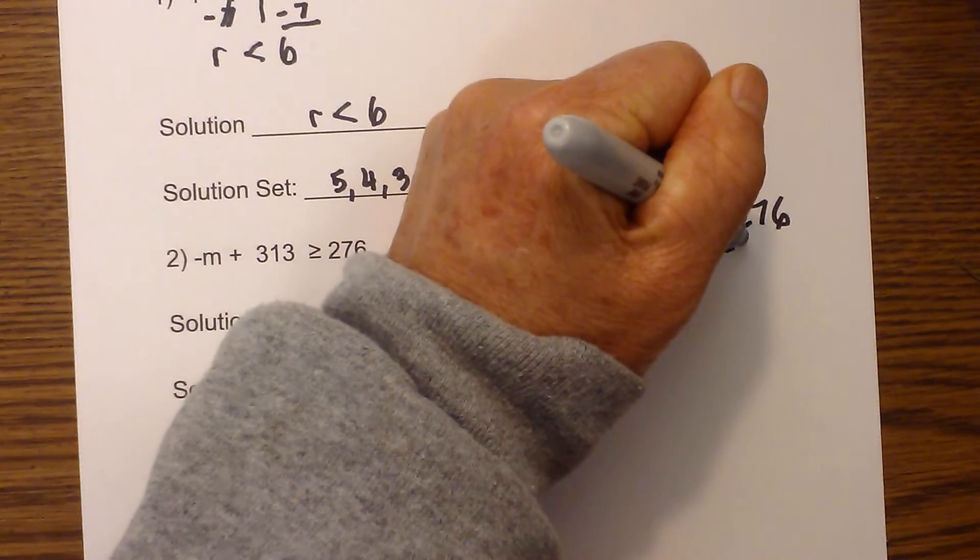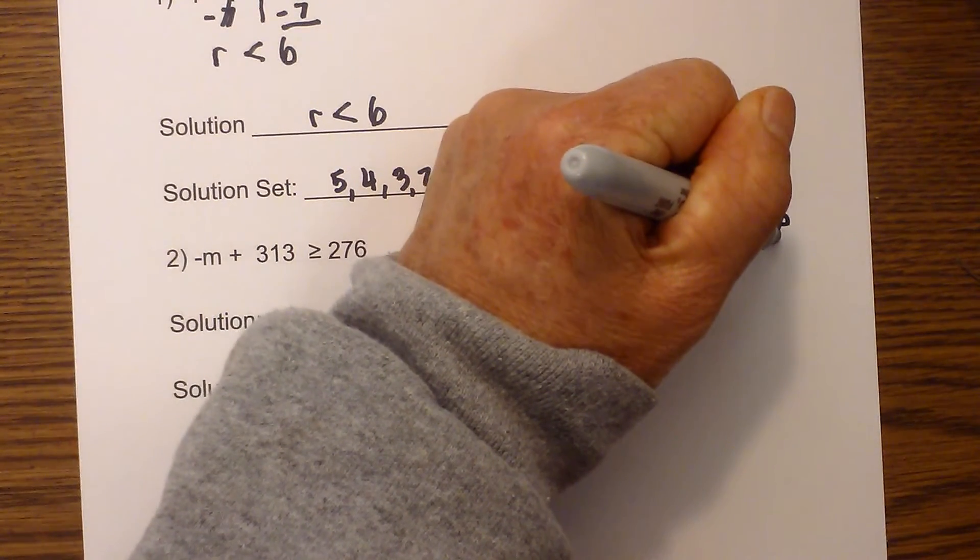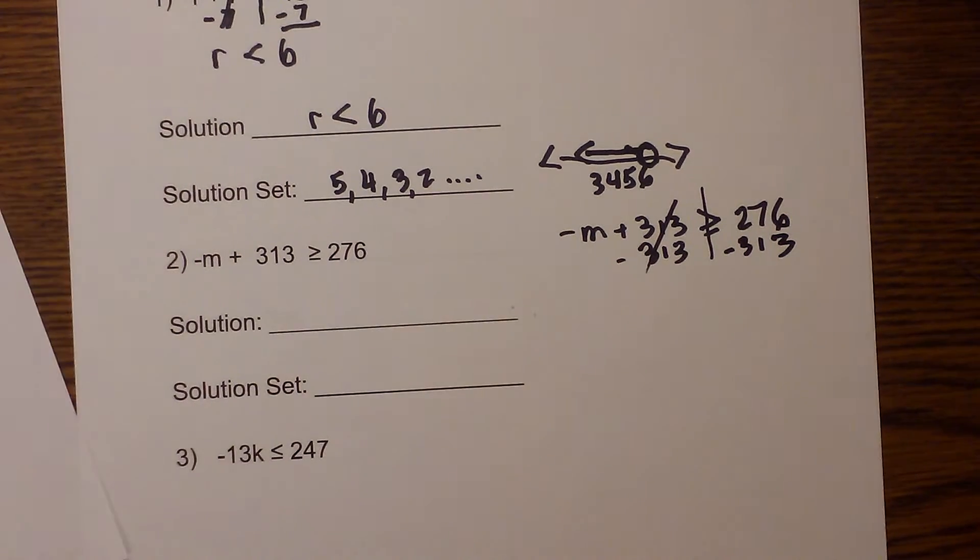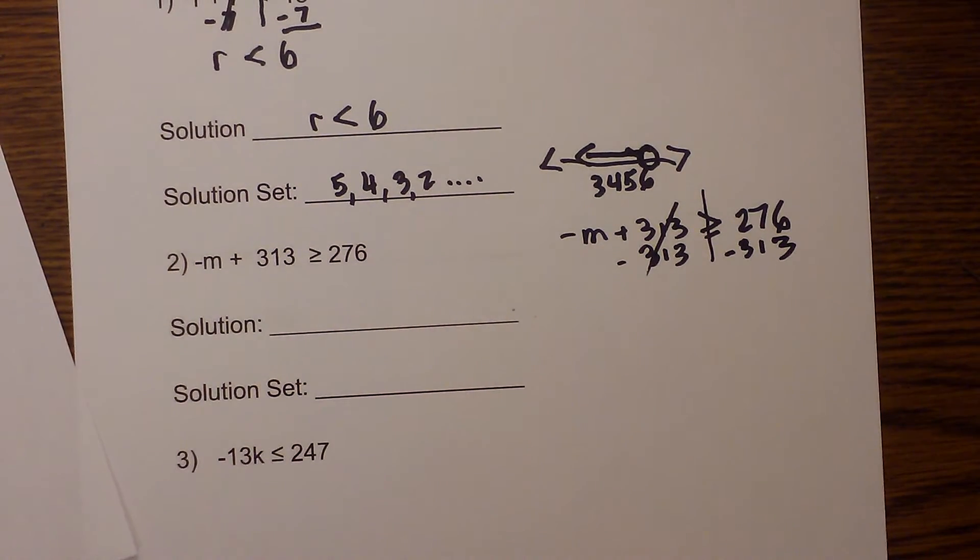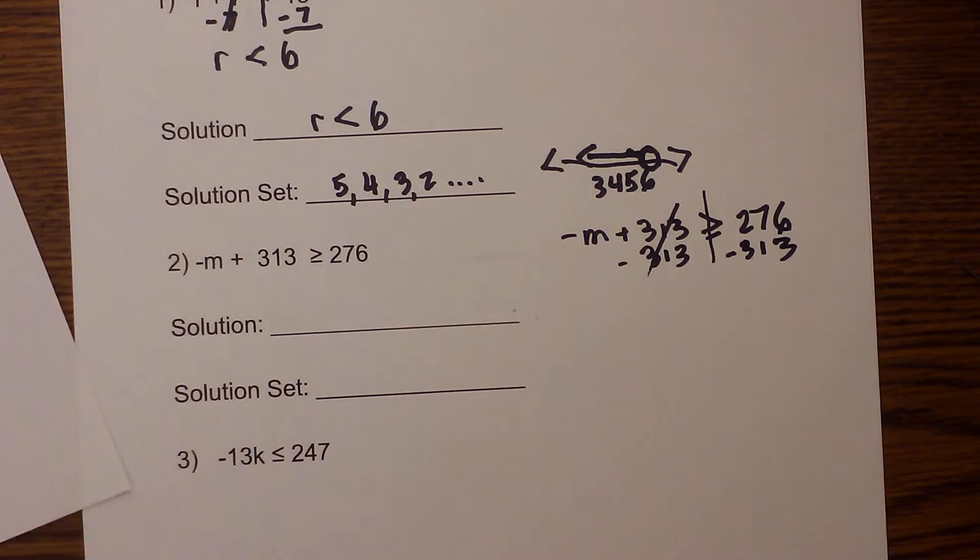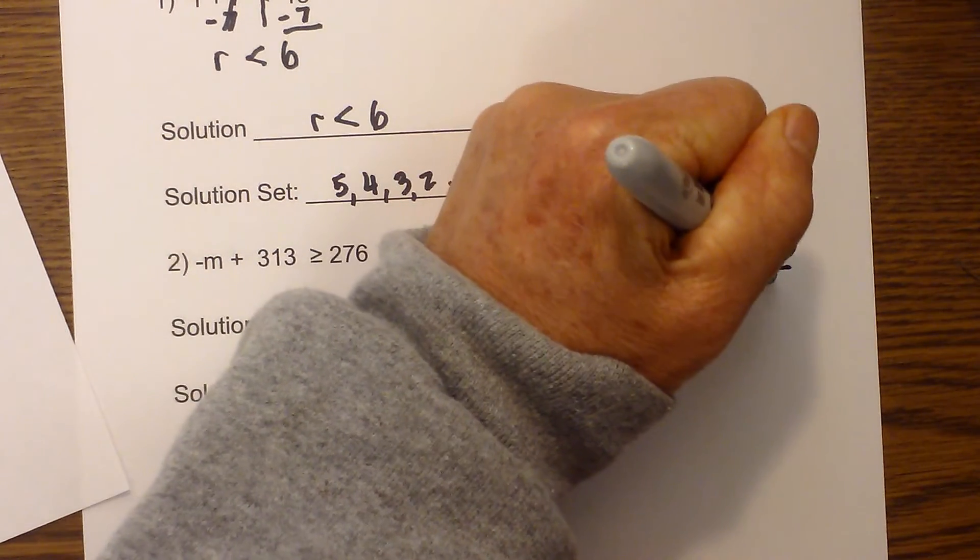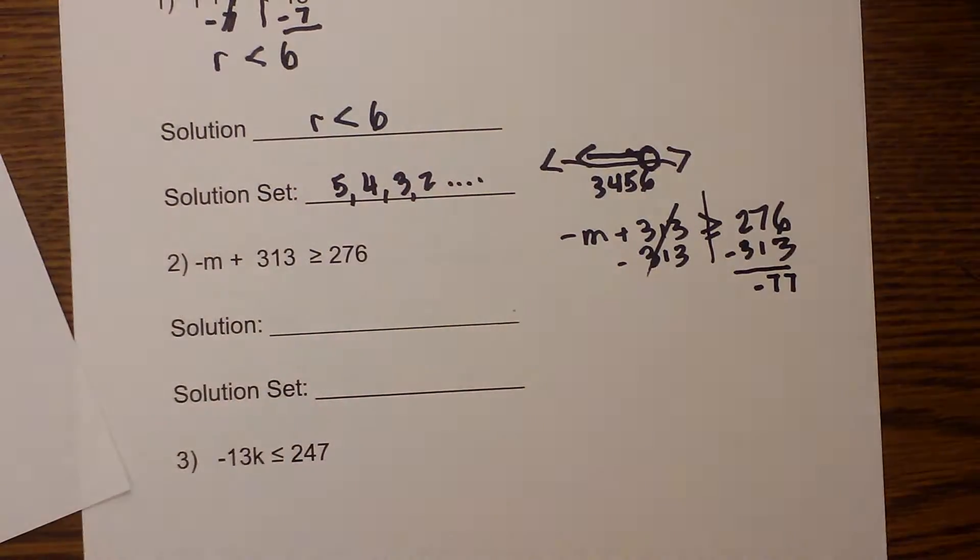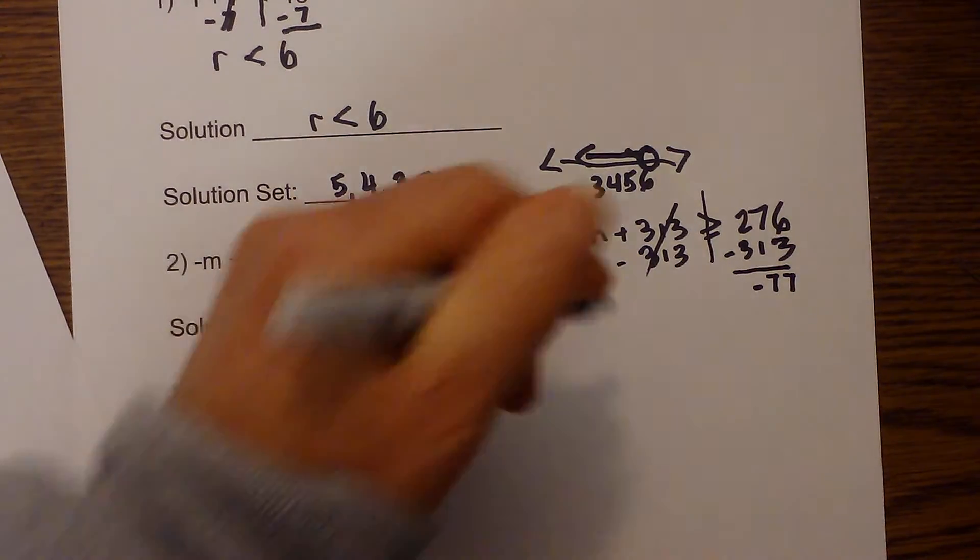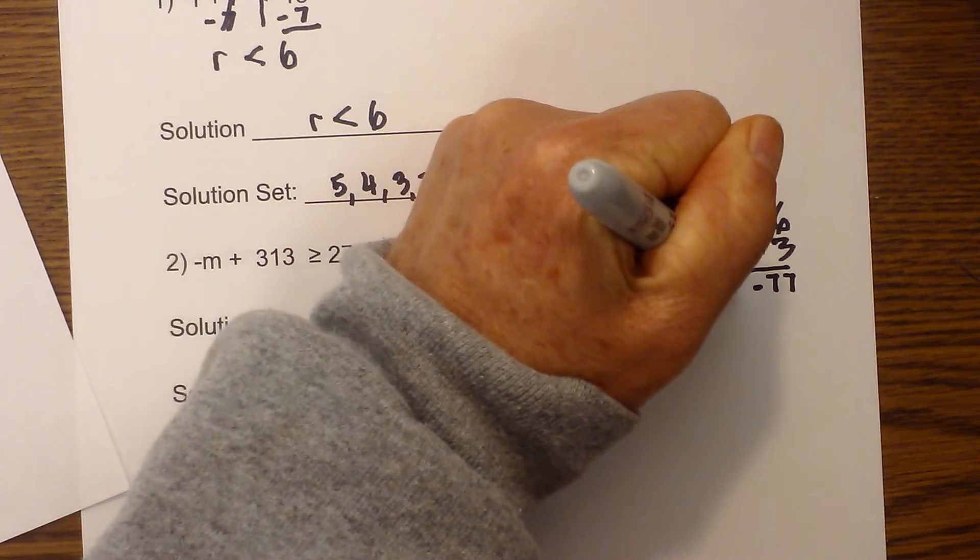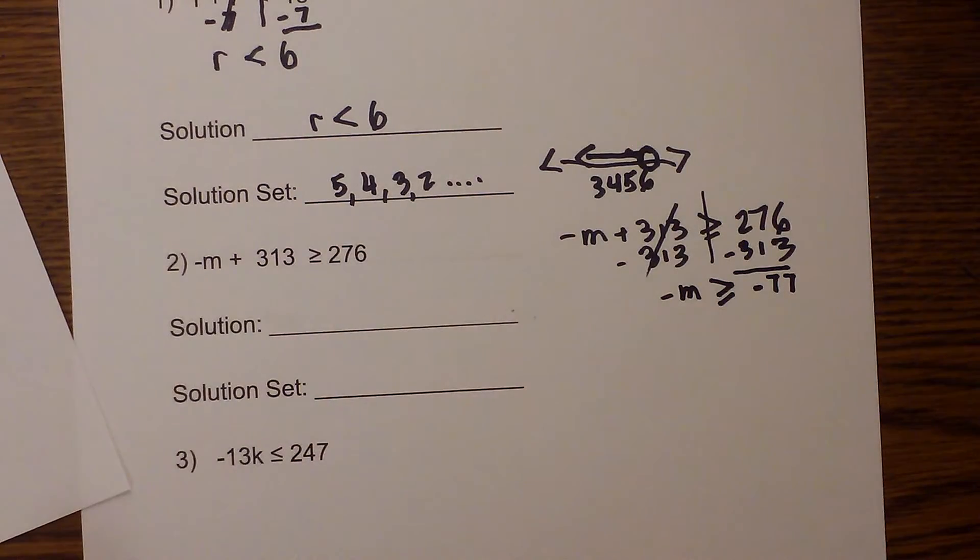And 276 minus 313 is, let's see here, let me get this, will be negative 77.